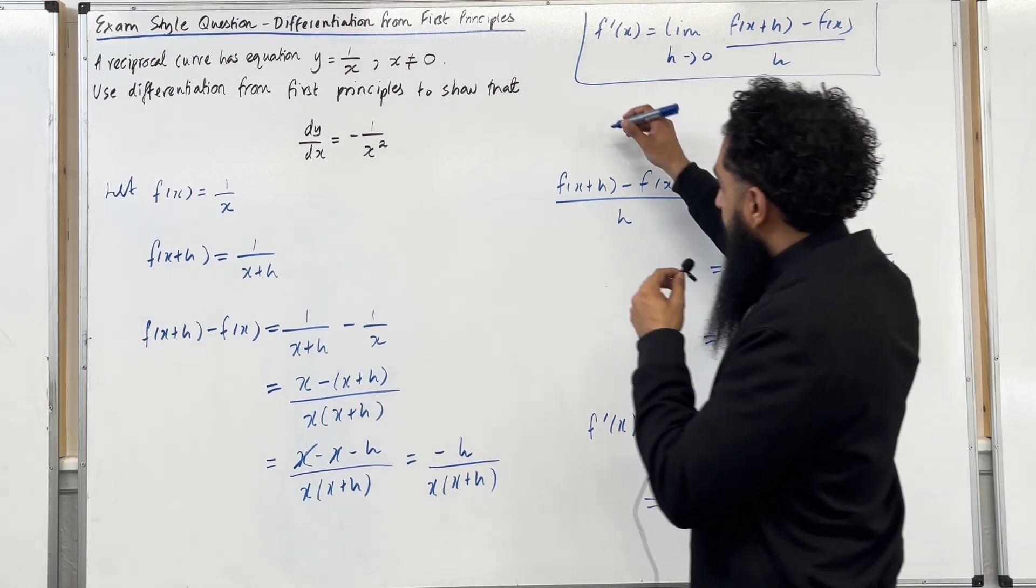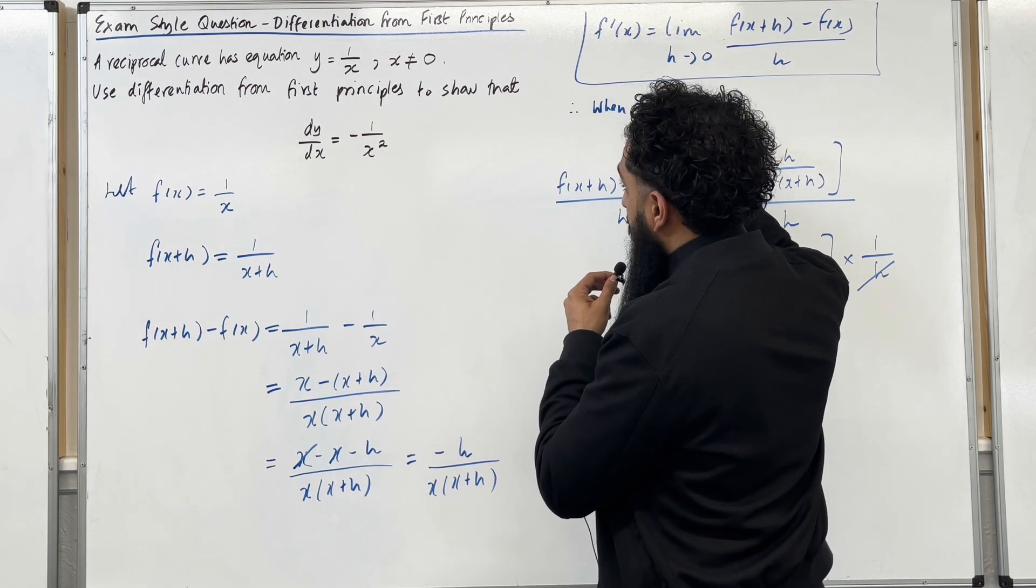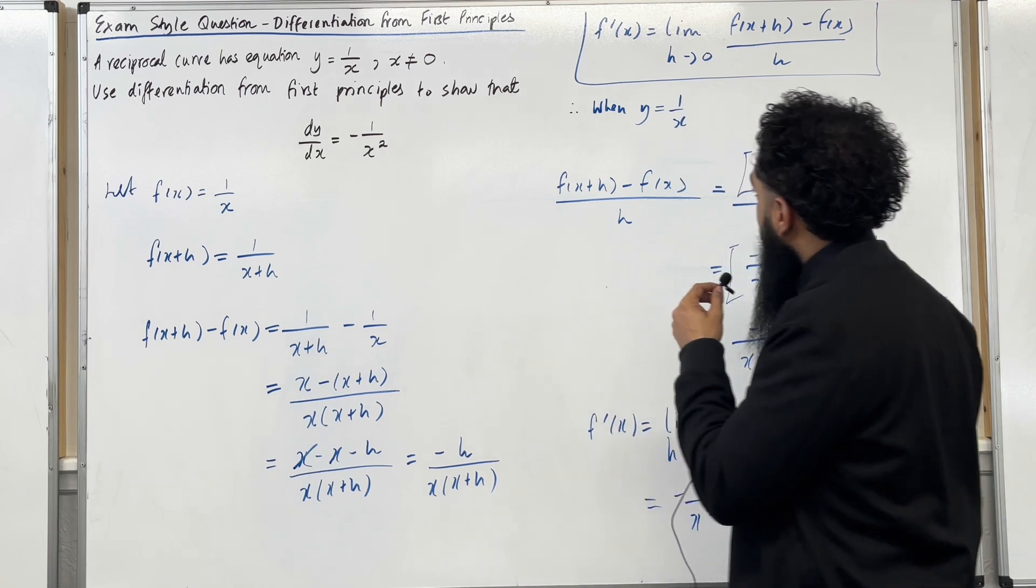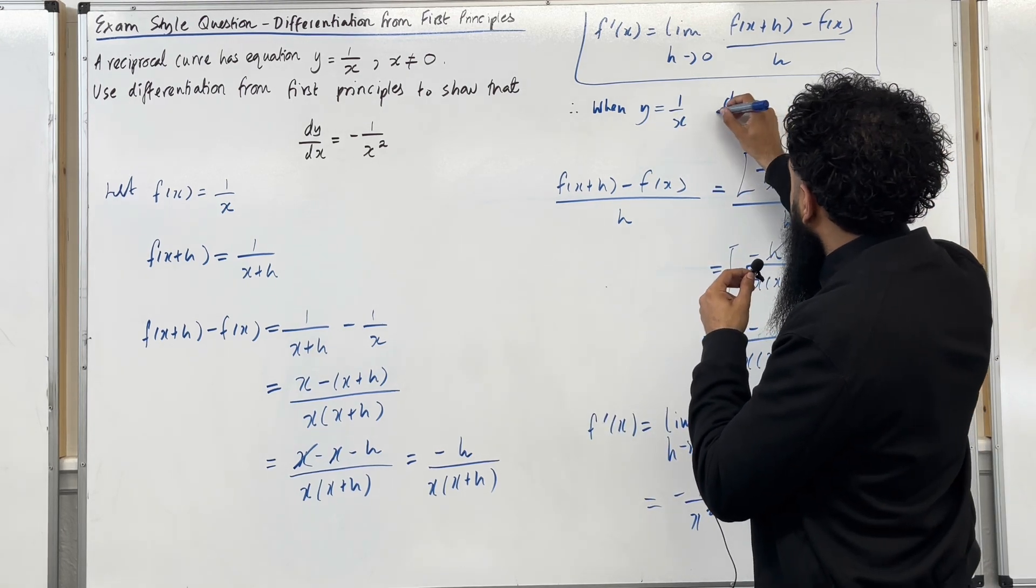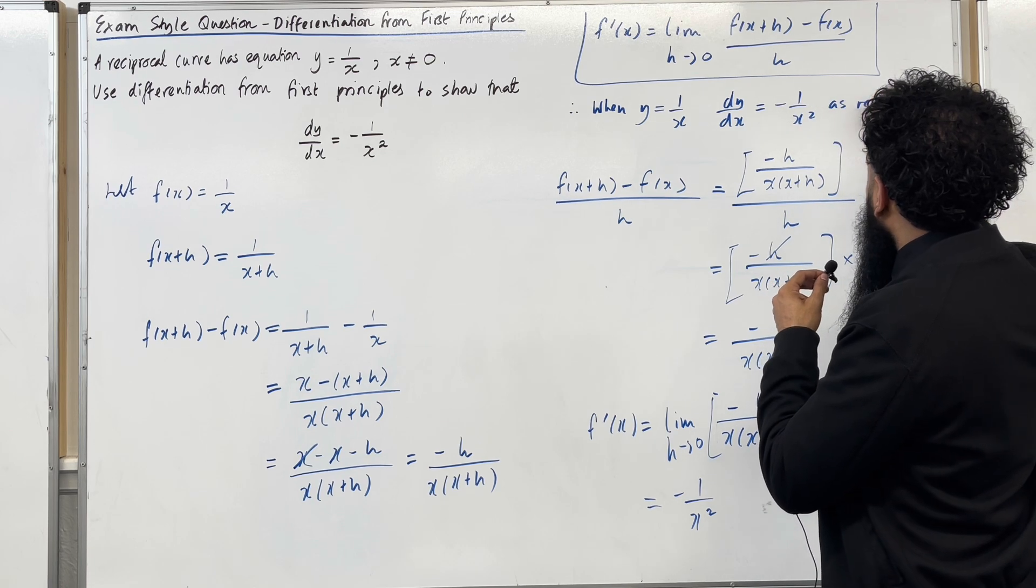So now we can write a conclusion. Therefore, when y is equal to 1 over x, dy over dx is equal to minus 1 over x squared as required.